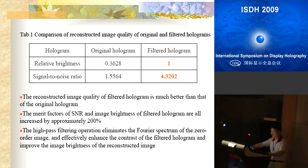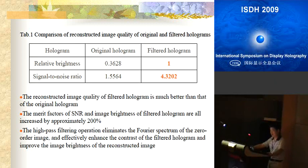Table 1 gives a comparison of the reconstructed image quality of the original and filtered holograms. The relative brightness and signal-to-noise ratio of the original hologram are only 0.636 and 1.5, respectively, while the filtered hologram has a relative brightness of 1 and a signal-to-noise ratio of 4.3. The metrics of SNR and image brightness of the filtered hologram are all increased by approximately 200 percent. The high-pass filtering operation eliminates the Fourier spectrum of the zero-order image, effectively enhancing the contrast of the filtered hologram and improving the image brightness of the reconstructed image.